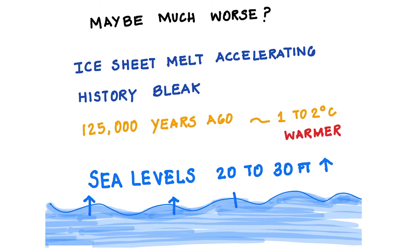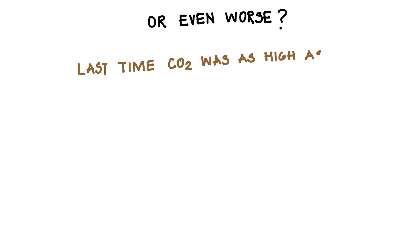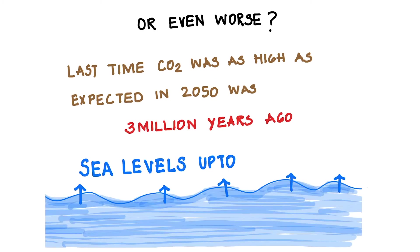125,000 years ago was the last time our planet was 1 to 2 degrees Celsius warmer. What happened then? Sea levels rose 20 to 30 feet, which would put 600 million people who live in coastal areas less than 10 meters above sea level at risk. The last time carbon dioxide levels were as high as scientists expect them to reach by 2050 was 3 million years ago — back then, sea levels rose up to 70 feet, which would put billions of people at risk.